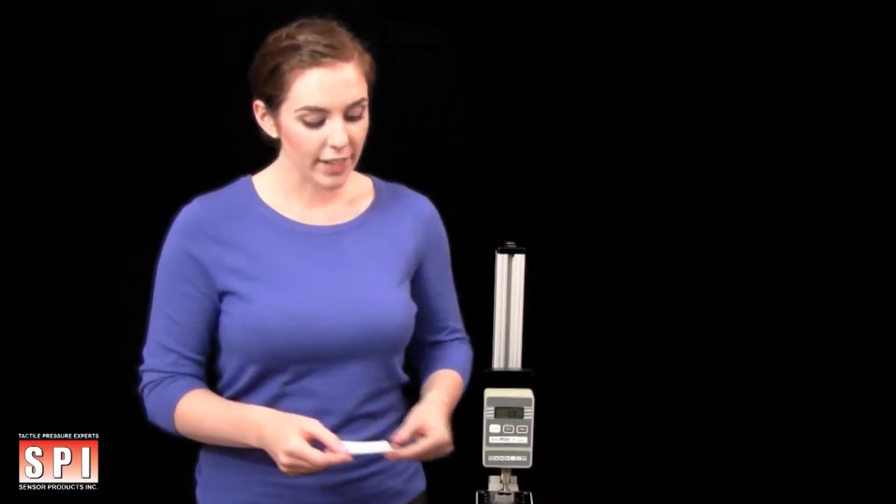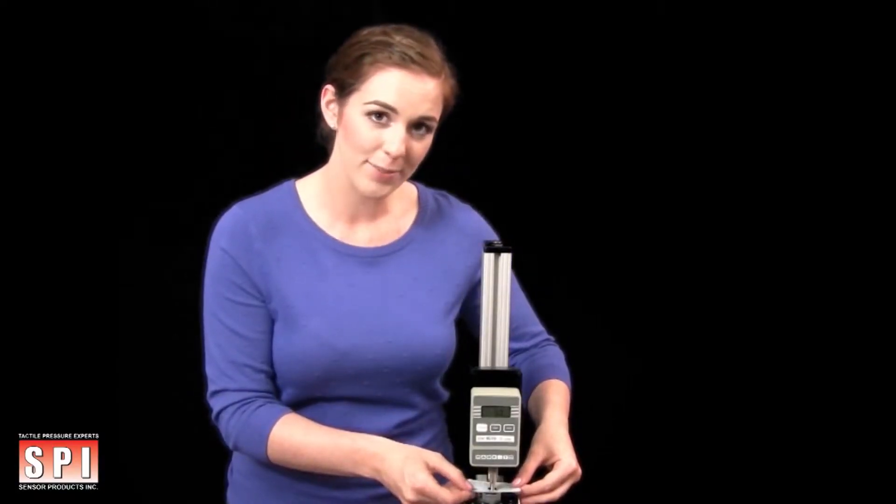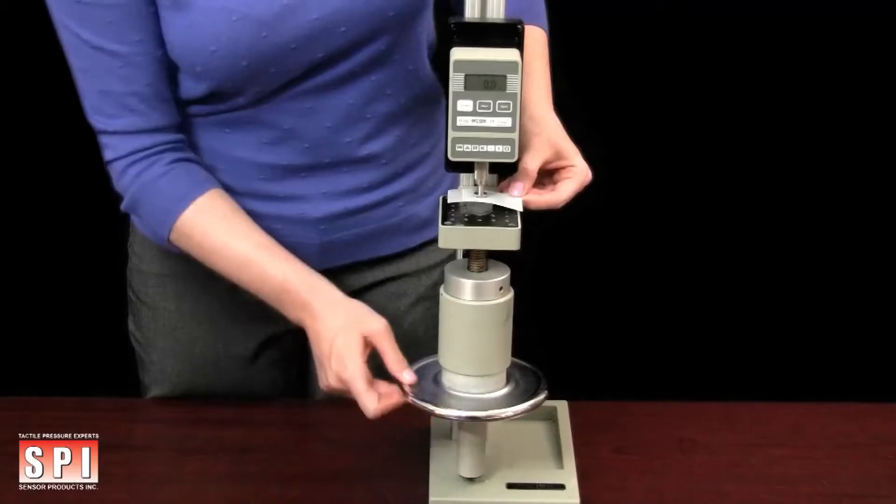Place the pressure film sandwich that you have created on the area of your device, machine, or part where the contact pressure will be occurring. Apply force, then remove.